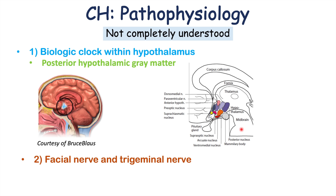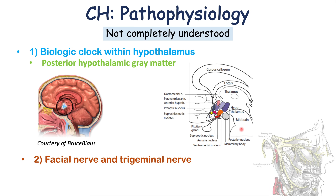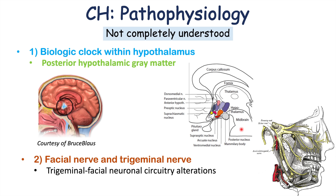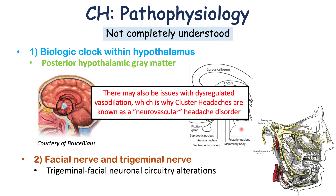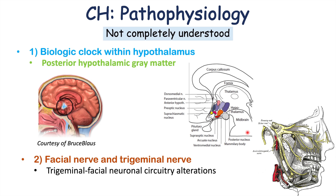The facial nerve and the trigeminal nerve are also implicated in the pathophysiology of this condition. There may be alterations in trigeminal-facial neuronal circuitry. Because of these pathophysiological mechanisms, we can see periodicity with the attacks, and facial and trigeminal nerve involvement leads to particular signs and symptoms.